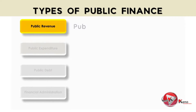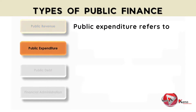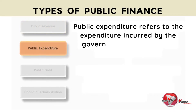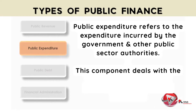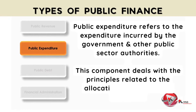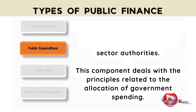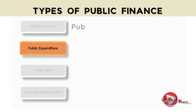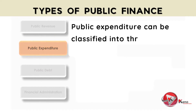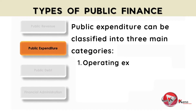Next is public expenditure, which refers to the expenditure incurred by the government and other public sector authorities. This component deals with all the principles related to the allocation of government spending. Public expenditure can be classified into three main categories. The first is operating expenditure, which is all expenditure used to ensure the smooth running of public services, such as staff salaries, maintenance costs, and the purchasing of consumable supplies.